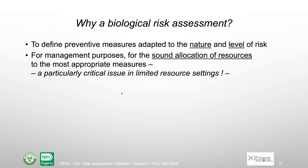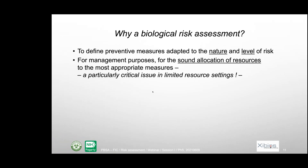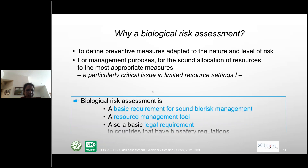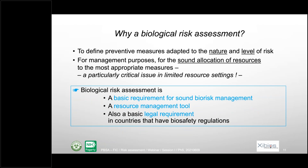Why do we do a biological risk assessment? The main purpose is to define the preventive measures adapted to the nature and level of risk. But we also do that for management purposes — for the sound allocation of resources to the most appropriate measures. We don't want to spend resources blindly; we want to put protection means where they are most needed. This is even more critical in limited resource settings. As a conclusion, biological risk assessment is a basic requirement for sound risk management, but it's also a resource management tool.